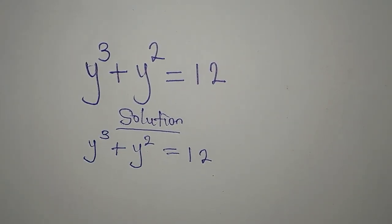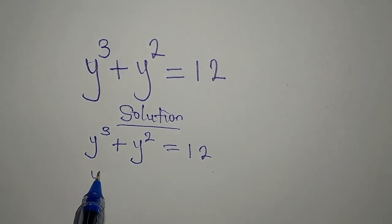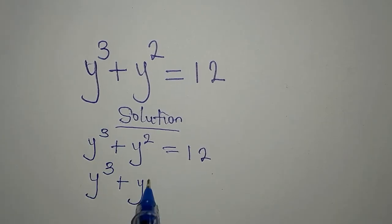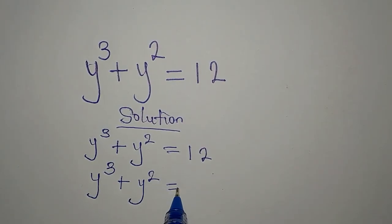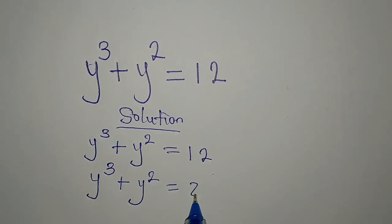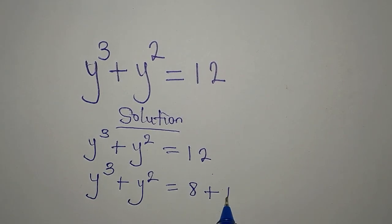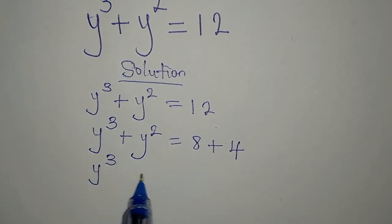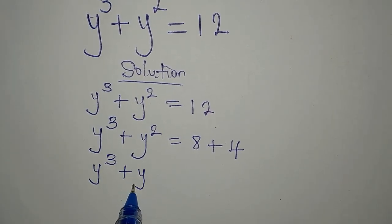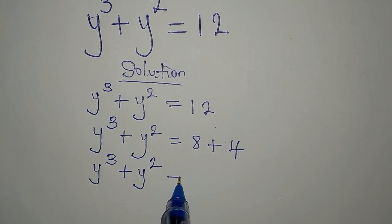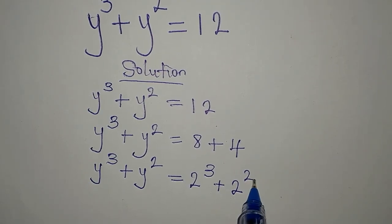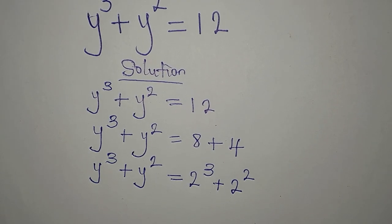We write y³ + y² = 12, and express 12 in the form 8 plus 4. So y³ + y² is equal to 2³ + 2².